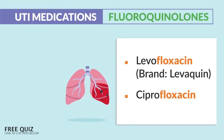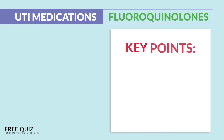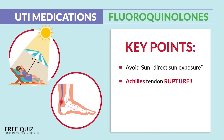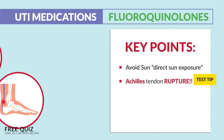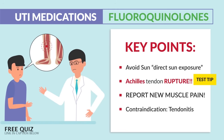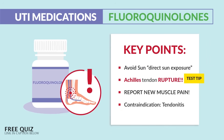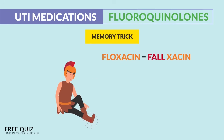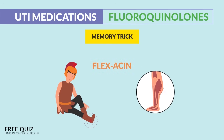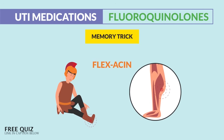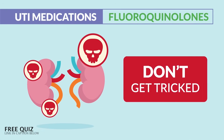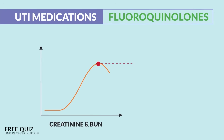Next is fluoroquinolones — levofloxacin and ciprofloxacin — brand name Levaquin, given to pneumonia and UTI patients. Key points: avoid direct sun exposure, and watch for Achilles tendon rupture — a huge test tip. Teach patients to report new muscle pain, and a big contraindication is tendinitis. Memory trick: call it 'fall-oxacin' since you can fall with an Achilles tear, or 'flex-acin' since it hurts when you flex your calf.